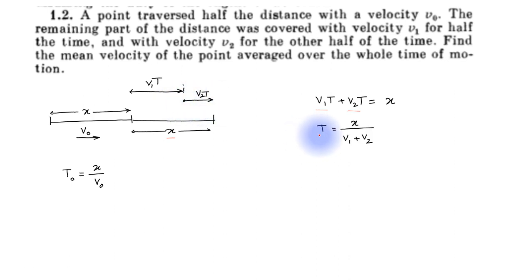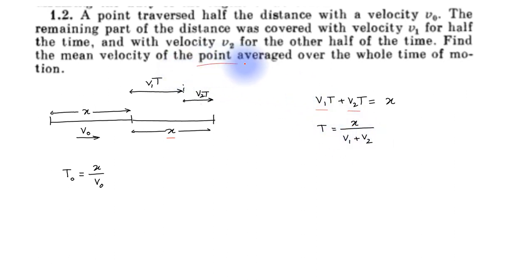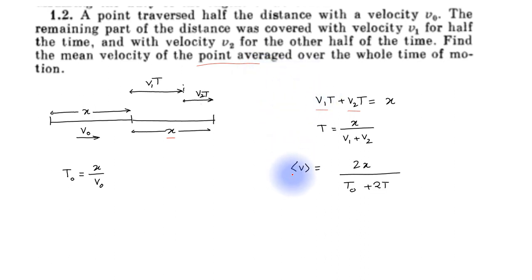Therefore, time t equals x divided by (v1 plus v2). Now we have to find the average velocity over the whole time of motion. Average velocity is given by total distance, which is 2x in this case, divided by total time.